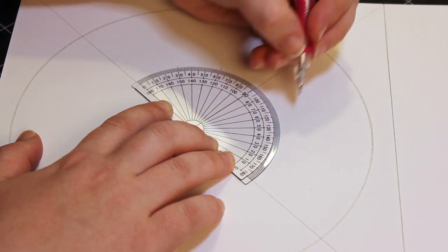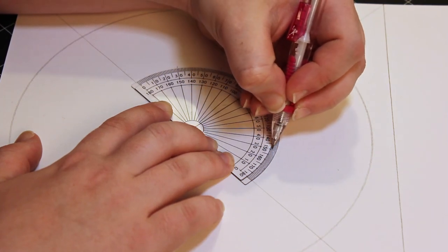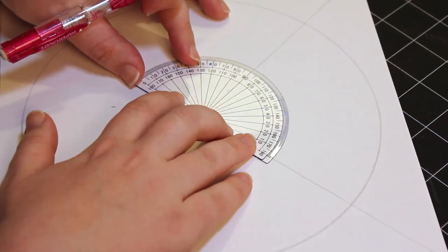That's at 30 degrees, 60, 90, 120, and 150. When finished, do the same on the other half of the circle.